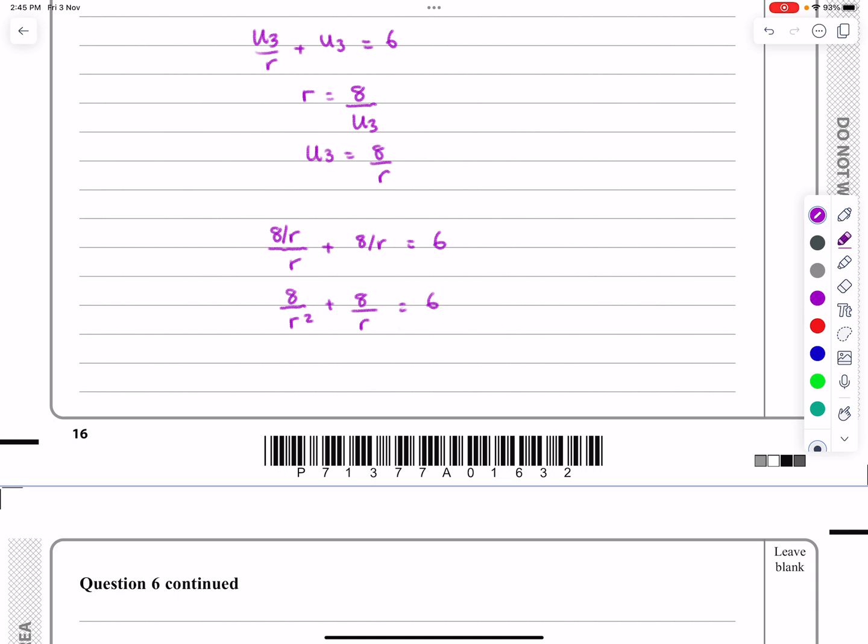And then at this stage now, if I multiply everything by R squared, I'm going to get 8 plus, multiplying 8 over R by R squared gives me 8R, multiplying 6 by R squared gives me 6R squared there.